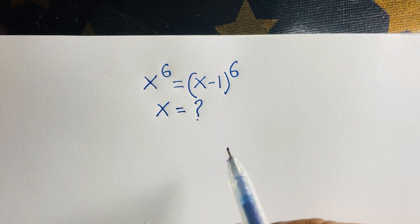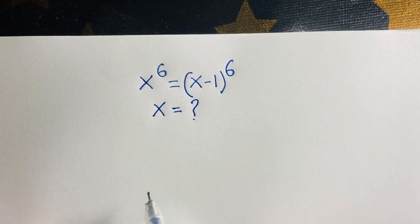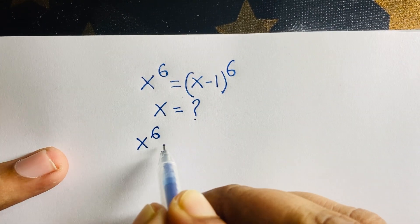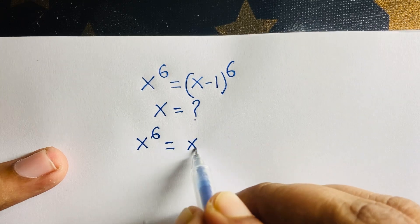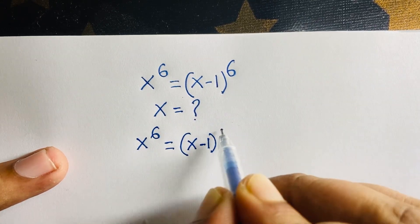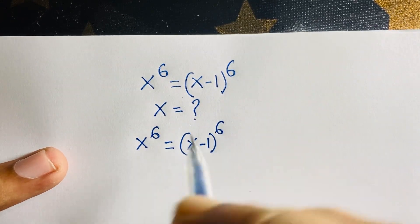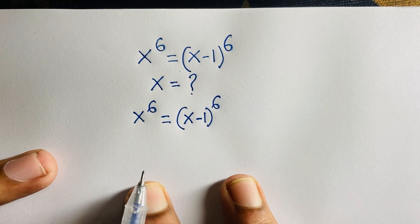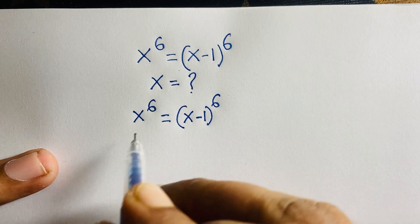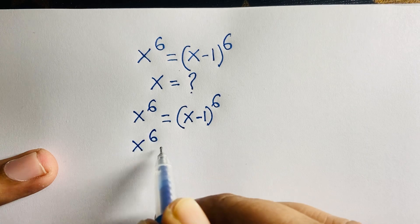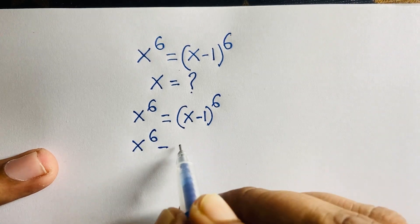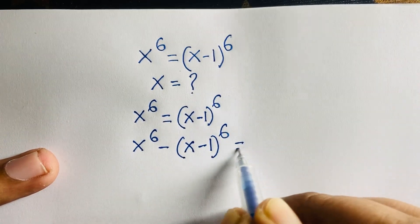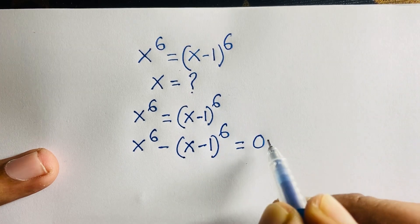So let's start. Our question is x to the power 6 is equal to x minus 1 whole to the power 6. This equation becomes x to the power 6 minus x minus 1 whole to the power 6 is equal to 0.